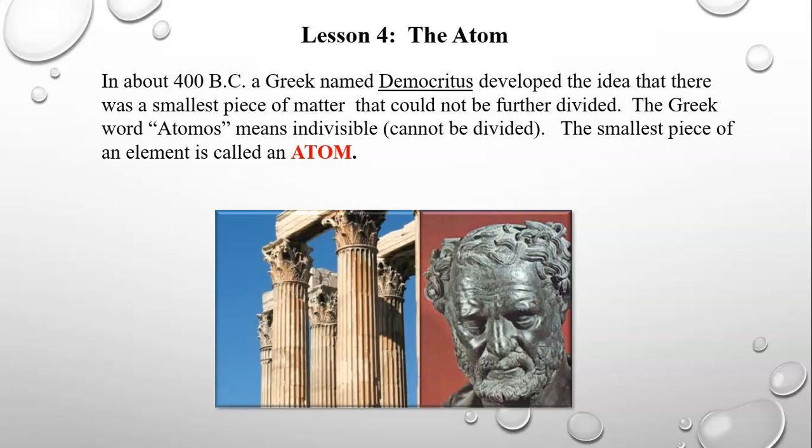Some Greeks said yes, you can cut it forever — theoretically, if you had a small enough knife. Others said there would be a smallest piece of gold beyond which, if cut again, it would no longer be gold. We now know that is correct — an atom is the smallest piece of any pure element.